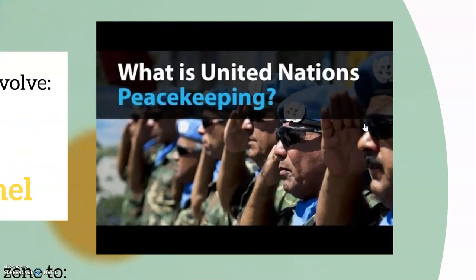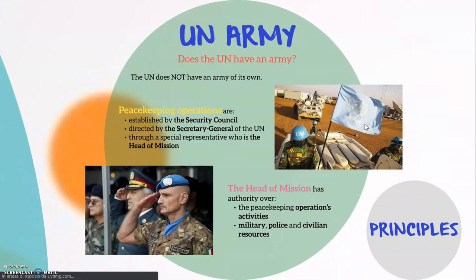Does the UN have an army? The UN does not have an army of its own. It uses troops, equipment, and money from its member states in peacekeeping missions. Peacekeeping operations are established by the Security Council and directed by the Secretary General of the UN through a special representative who is the head of mission. The head of mission has authority over the peacekeeping operation's activities — military, police, and civilian resources.